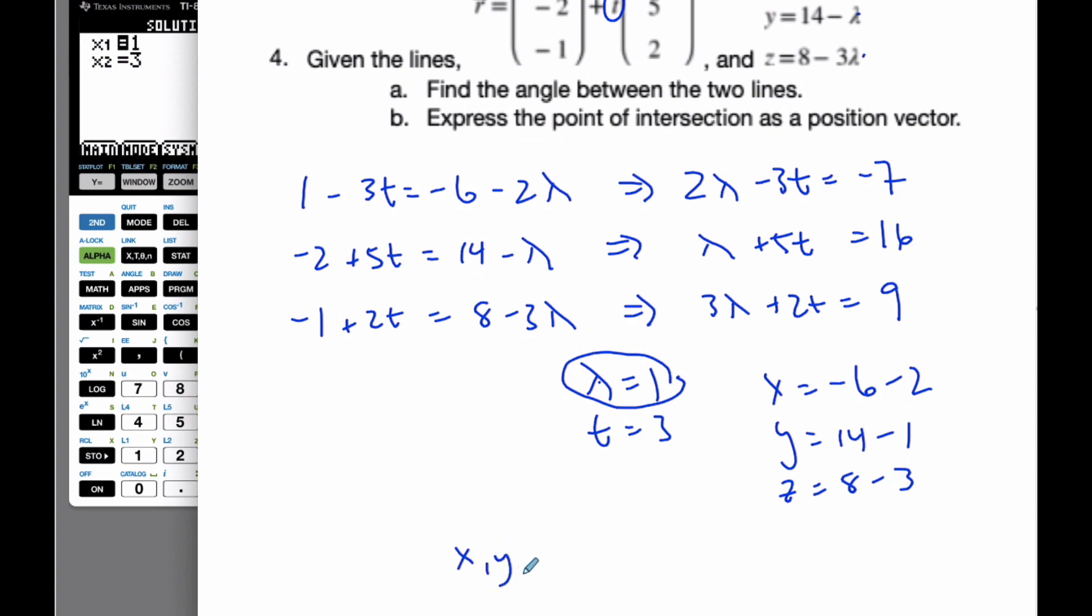And so my point of intersection is simply going to be negative 8, 13, and 5. Because the x is the x, the y is the y, and the z is the z.